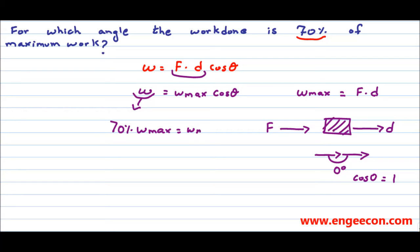This 70% can be written as 70 divided by 100, which comes out to be 0.7. So 0.7 W_max equals W_max cos theta. Dividing W_max on both sides, we get cos theta equals 0.7.